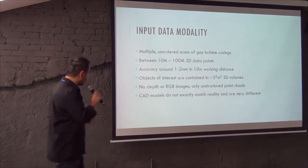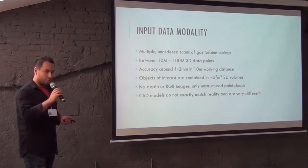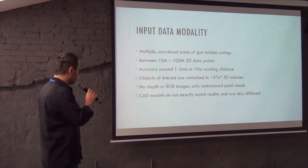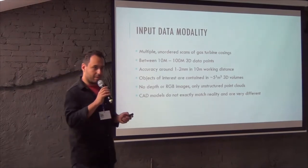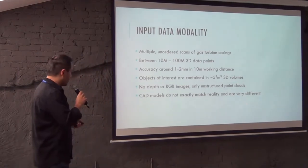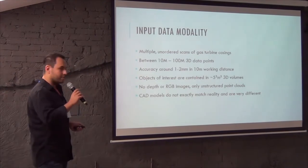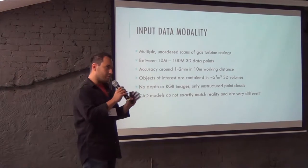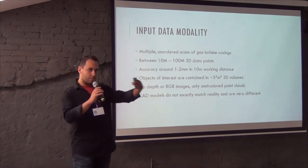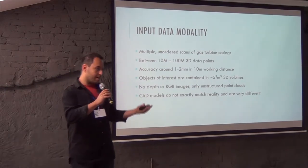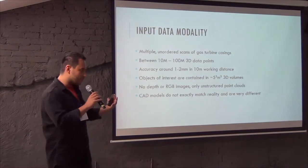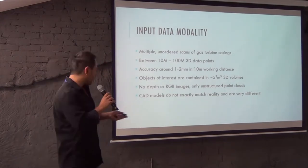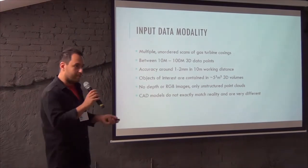A laser scan gives you points in that range — one scan gives you 100 million points immediately. If you have a second scan, you will have 200 million. The accuracy at 10-meter working distances is around 1–2 millimeters, so it's pretty good. We work on unstructured point clouds and don't want RGB images. If you think about the Kinect, it gives you a depth image — a projection of the world into a plane. From a laser scanner, it's the projection into a sphere, so the underlying manifold changes. We want to be invariant to this change.